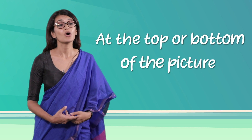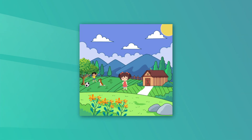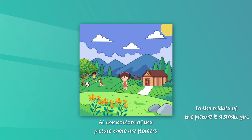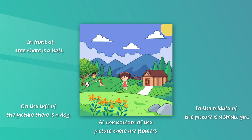Another important point to consider when describing a picture is to figure out where in the picture the subject is. You can use phrases such as: 'At the top or bottom of the picture' — 'At the bottom of the picture there are flowers.' 'In the middle of the picture' — 'In the middle of the picture is a small girl.' 'On the left or right of the picture' — 'On the left side of the picture there is a dog.' 'Next to' — 'Next to the dog there is a ball.' 'In front of' — 'In front of a tree is a ball.'